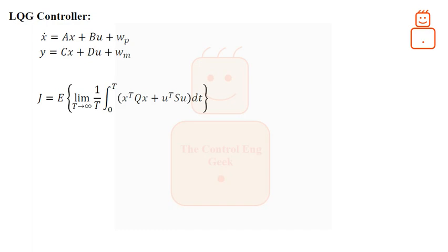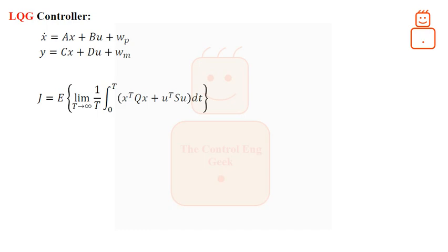The LQG controller considers the expected value of the cost J, because we are dealing with stochastic process control. In this cost function, Q and S are appropriately chosen constant weighting matrices used as design parameters. Q and S are chosen to be symmetric. Q is chosen to be a semi-positive definite matrix — that is, the eigenvalues of Q are equal to or greater than zero — while S is a positive definite matrix. The name LQG arises from the use of a linear model, an integral quadratic cost function, and Gaussian white noise processes to model disturbance signals and noise.